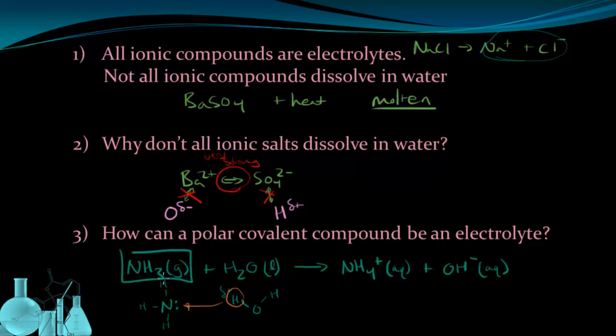Now, NH3 did not dissociate. So this reaction up here, this was dissociation. NH3 did not fall apart to become ions the same way that NaCl did. So it's not dissociation. This is instead called ionization. This is the ionization of ammonia.